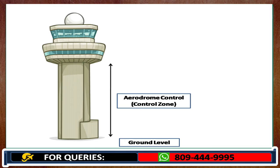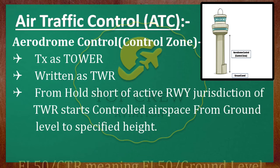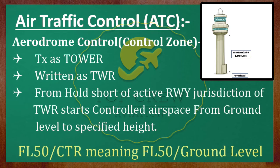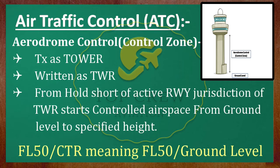The radius is not unlimited — it can be 5 nautical miles, 10, 20, 30, whatever it is, as per that particular aerodrome. From ground level to the specified limit — for example, if it is written flight level 5-0 oblique CTR on a chart, that means flight level 5-0 from ground level. This is how we mention it on charts. So, tower is from ground level to the specified limit within the mentioned radius.